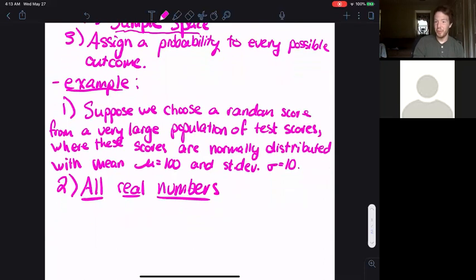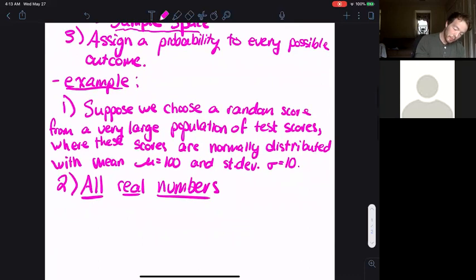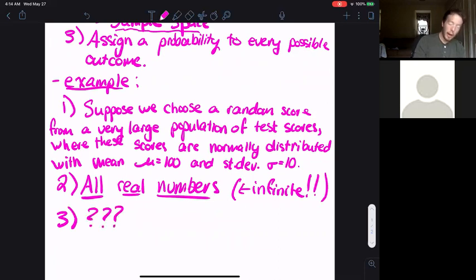That's kind of an issue because when we get to assigning probabilities, how do we assign a probability to every single real number? If you give every single real number a really small number, no matter how small, all those little numbers are going to add up and be something greater than one. And probabilities always have to add up to one.